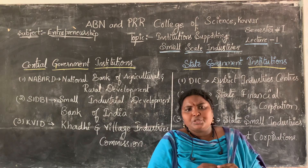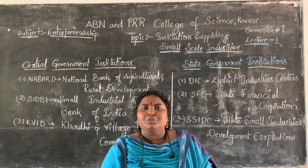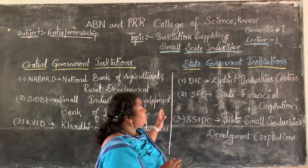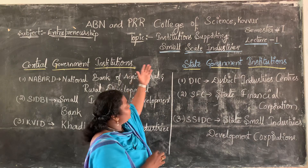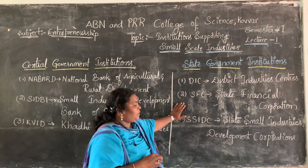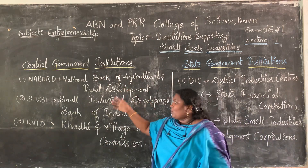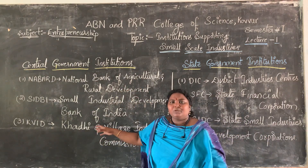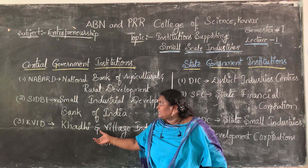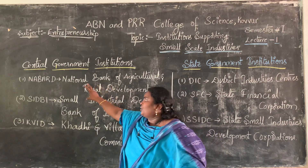A number of people come together and work together to get their revenue. This is the first topic: institutions supporting small scale industries. We have seen the two categories. We will see the details — the central government institutions — and the next video will explain the topics in detail.